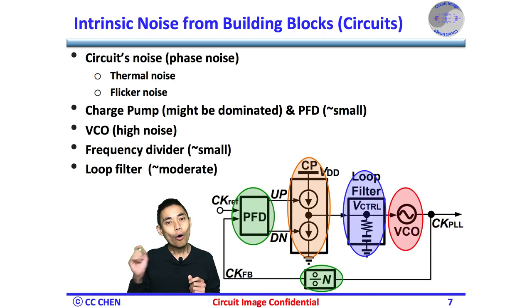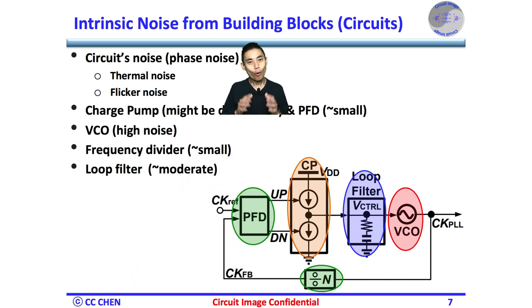After knowing all the building circuit blocks, we can dive into the circuit noise in a PLL. As we know in Electronics 101, all active or passive circuit devices should have thermal noise and flicker noise. Those voltage noise up and down would translate to the phase noise of the timing jitter and the transition edge of the signal.